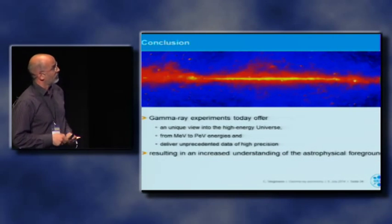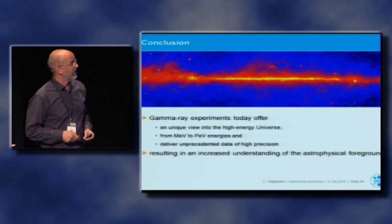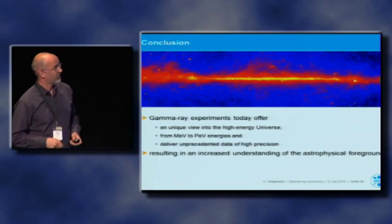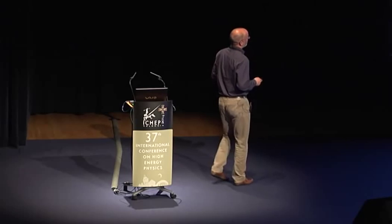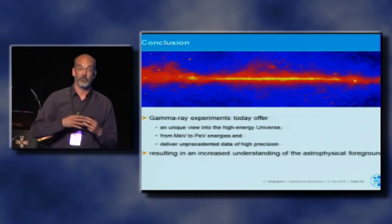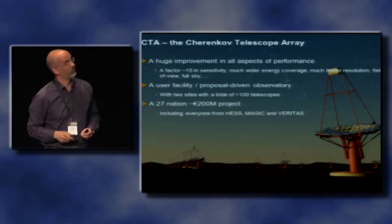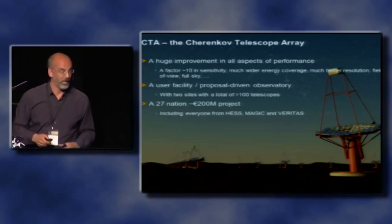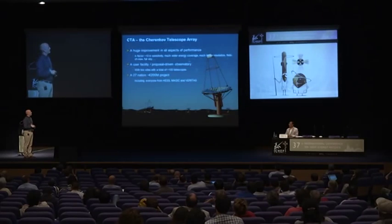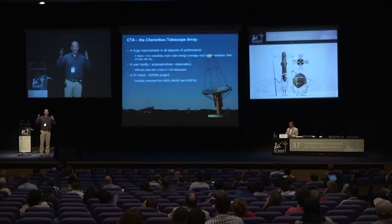This brings me to my conclusion. Gamma-ray experiments today offer a unique view of our high-energy universe across a very large energy range. They deliver unprecedented data and results, contributing to an increased understanding of the astrophysical foreground — which is very interesting on its own. We have to cover the whole energy range; I hope Fermi will operate for the next years. And my last slide: we have to build the Cherenkov Telescope Array. We will build it — it is a huge improvement in all aspects of performance, a proposal-driven observatory, a 27-nation, 200-million-euro project. Thank you very much.